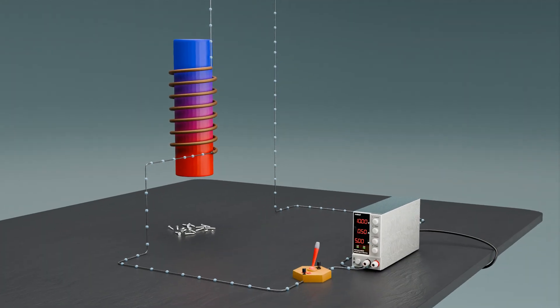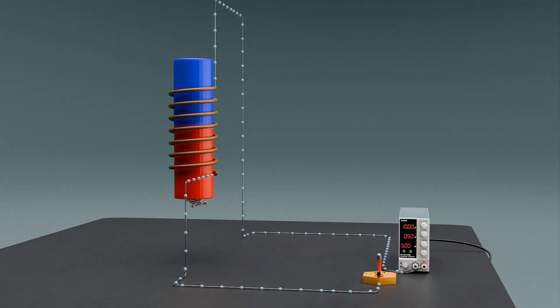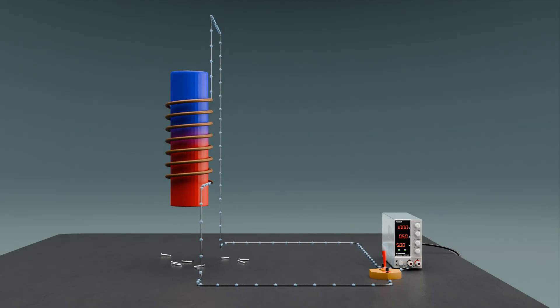The magnetic field generated by the solenoid exerts a force on the nearby nails, causing them to be attracted to the electromagnet.